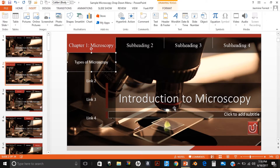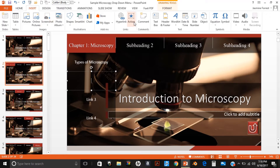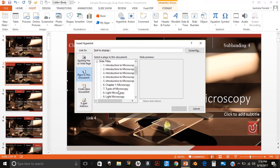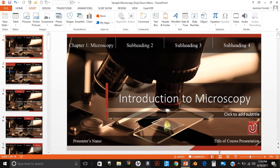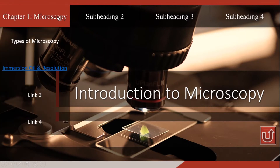A faster and easier way, if you do not want to type in your link titles, is to click inside the box, go to insert, hyperlink, place in this document, select the slide you want hyperlinked, and click OK. The title is automatically inserted and hyperlinked for you. Now when you start your presentation show, your link buttons are hyperlinked.